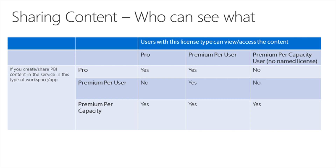As you can see on screen, there is a sharing content table showing who can share and how. This is provided by Microsoft and clearly shows the difference between Pro, premium per user, and premium per capacity — specifically who can access content and who cannot.